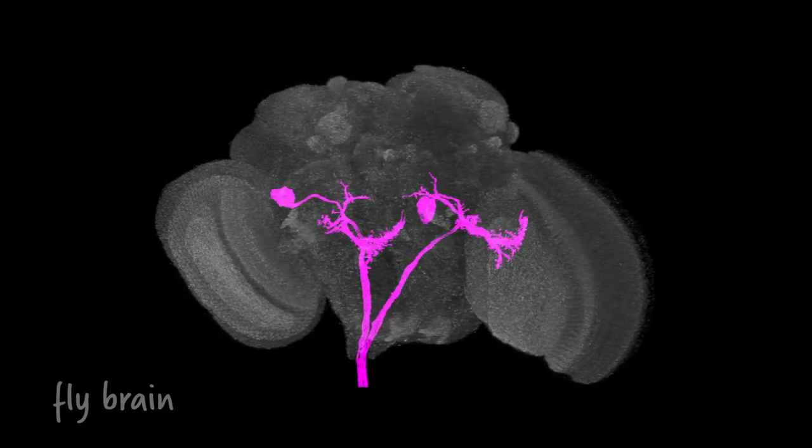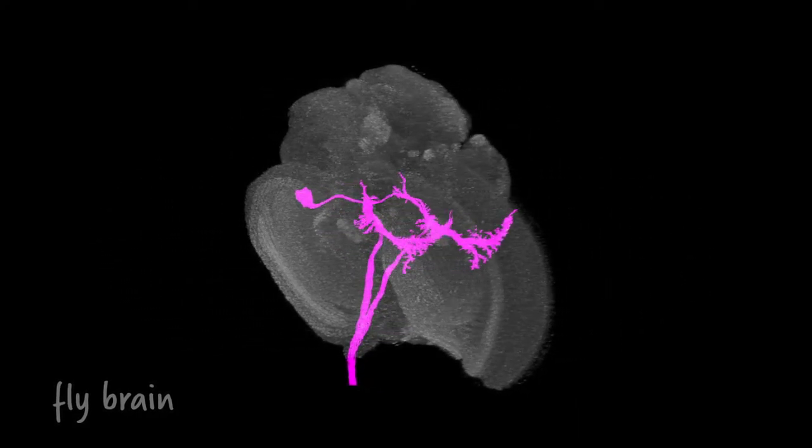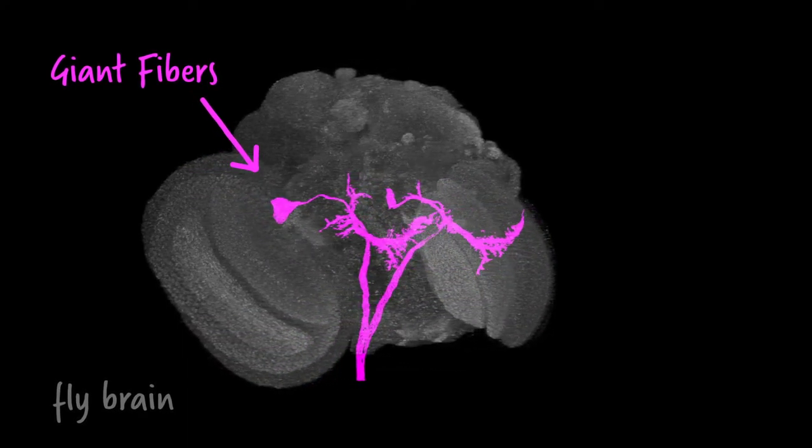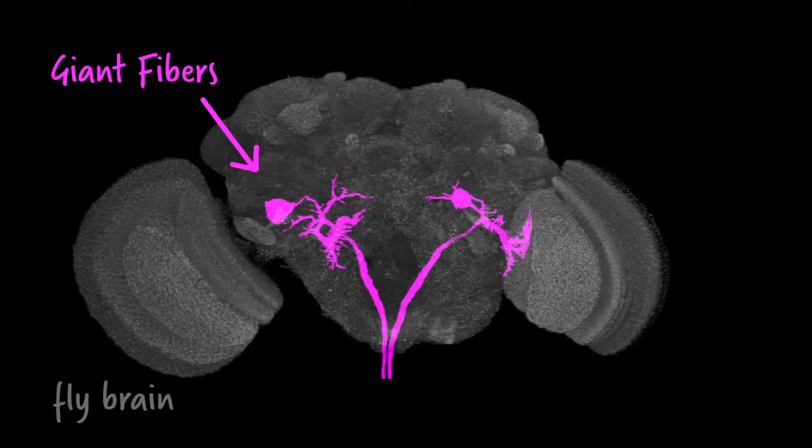Our previous work showed that short takeoffs occur if a single pair of large descending neurons, called the giant fibers, fire a spike before other descending neurons that control long takeoffs.